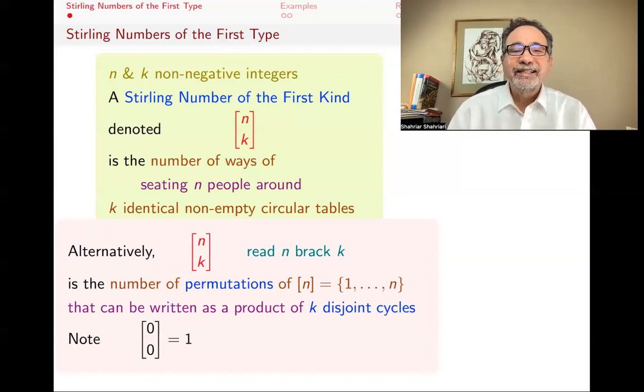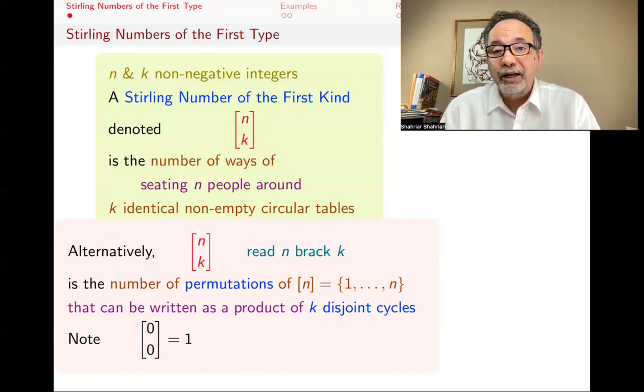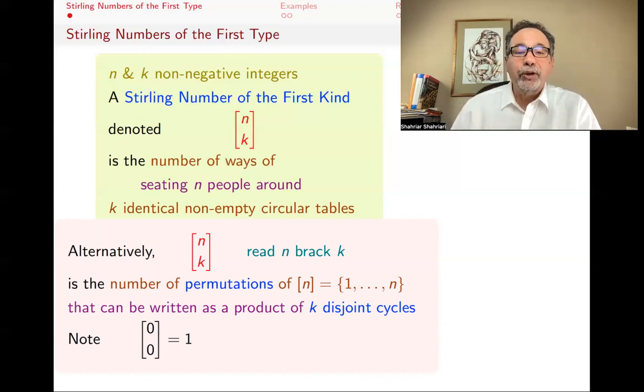So note that [0,0] is 1. You could have that as a definition, or you could say that it follows from our original definition. If you have 0 people, could you seat all of the people that you have around 0 tables? And the answer is yes, I'm already done. And then the next question is that if I do it and you do it, will you do it in different ways? No, we both will do the same way, which is doing nothing, and so there's only one way to do it.